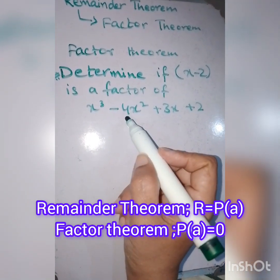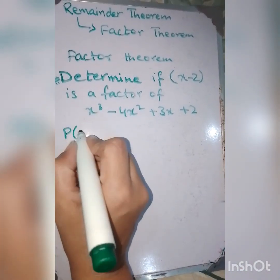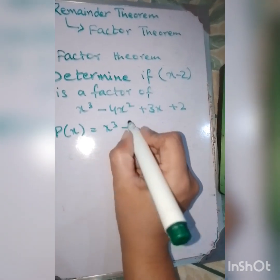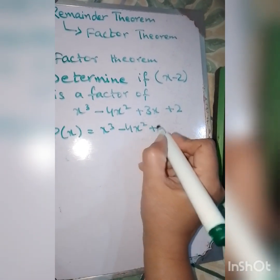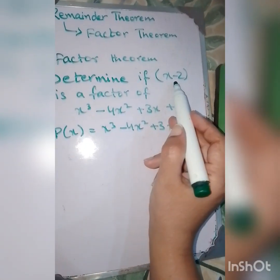You have to find if (x-2) is a factor of this polynomial. The given polynomial P(x) equals x³ - 4x² + 3x + 2. They are saying that it's a factor.